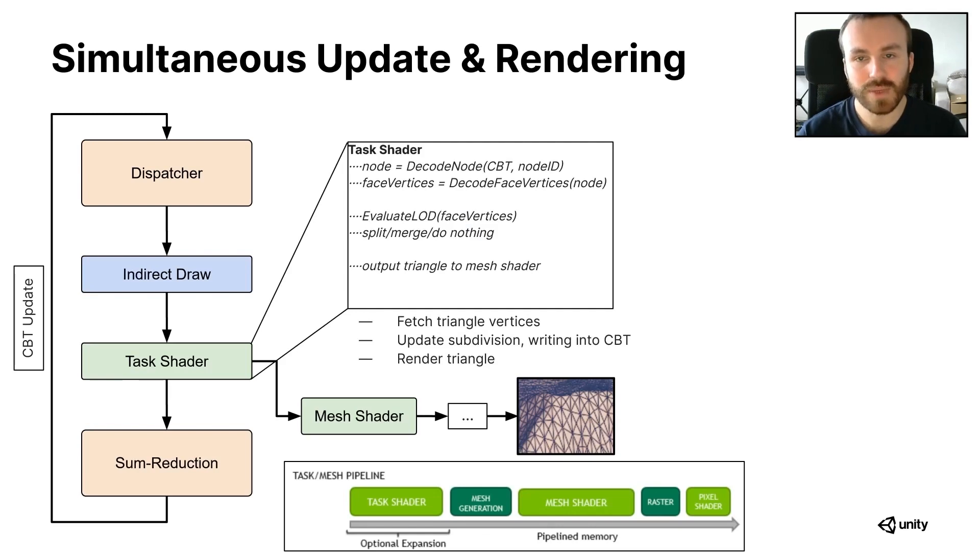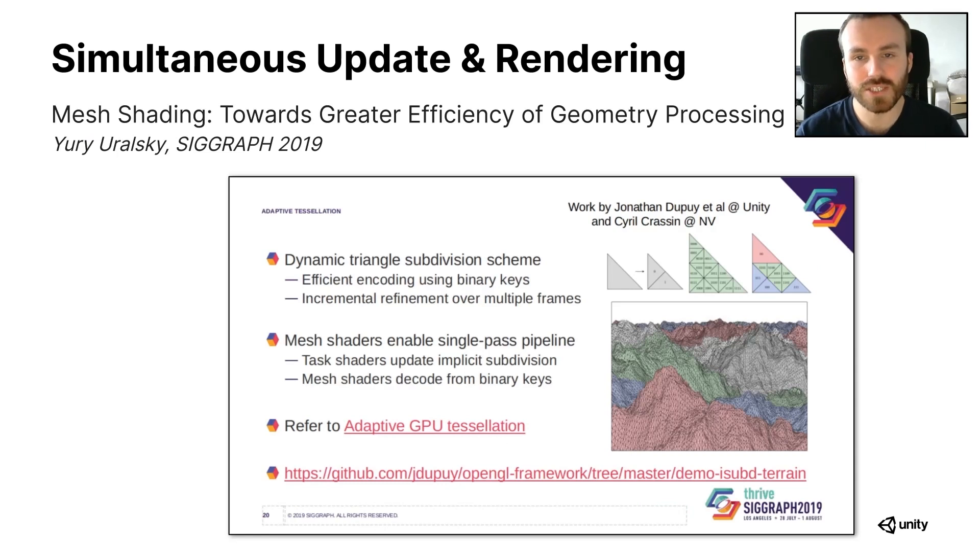On another subject, it would be possible to update the subdivision and render it simultaneously with the newly introduced mesh shader API. Mesh shaders basically introduce a compute-like capability to the first stage of traditional rendering shaders, and it replaces vertex shaders. Here we would simply update the subdivision during the task shader and let the mesh shader read from it right afterwards for immediate rendering. It is worth mentioning that combining Jonathan's work on GPU binary trees with mesh shaders was mentioned two years ago by Yuri Uralski during his SIGGRAPH presentation on this new API. So it's definitely a very interesting avenue for future research.